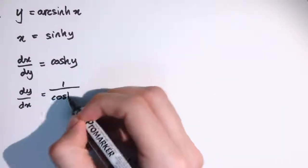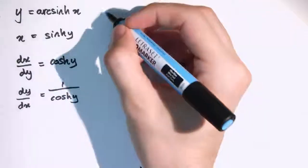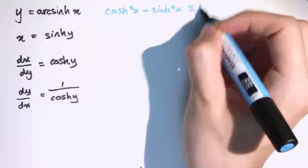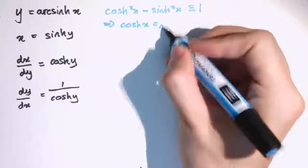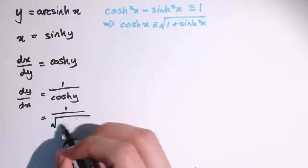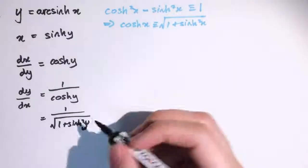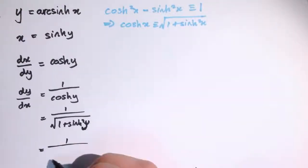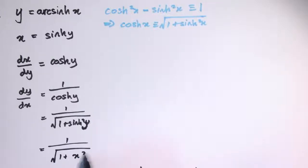Which is 1 over cosh y. We've got the identity cosh squared x minus sine squared x is 1, and we can rearrange that to give cosh x equals the square root of 1 plus sine squared x. So we replace cosh y with the square root of 1 plus sine squared y, and remember that sine y is x. So dy by dx is 1 divided by the square root of 1 plus x squared.